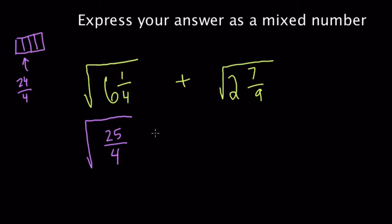Now the second one, same approach, but I'll use a different algorithm. Two wholes is 18-ninths plus 7 is 25-ninths. You could have also, the other algorithm you could use is 9 times 2 is 18, plus 7 is 25. So it's 25 over 9.